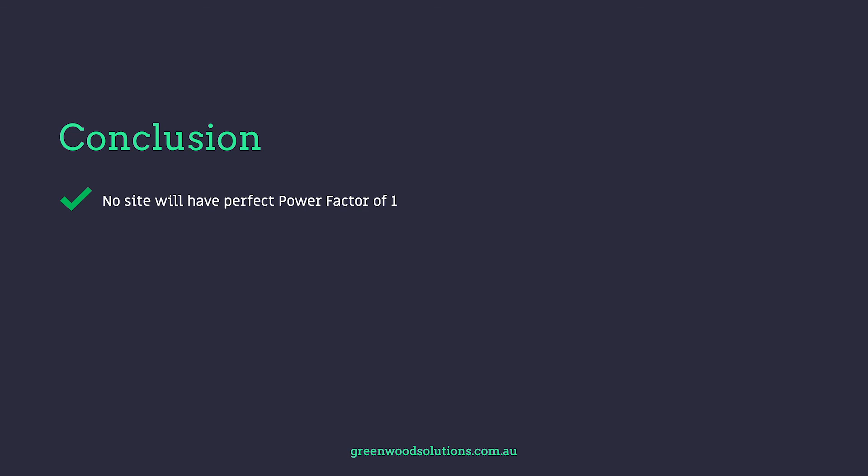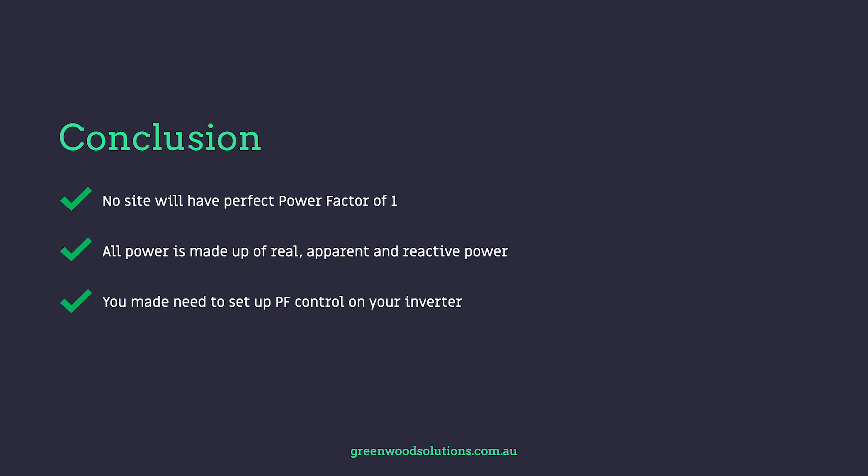Conclusion: no site will have a perfect power factor of one — it doesn't exist in reality. All power is made up of real, apparent and reactive. Another word for real power is active power. You might need to set up power factor control on your inverter depending on your site-specific attributes. Thanks very much for watching our video on real, active and apparent power. If you have any questions or inquiries, feel free to drop us a line, and if you feel like it, hit that subscription button. Thanks very much.